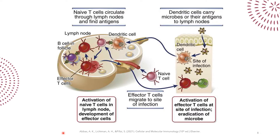If the presentation is successful, naive T cells will be activated to become effector T cells — what we call them after activation when they are ready to affect immune response. After this activation, some effector T cells will remain in the lymph nodes to help with the activation of B cells, while other T cells will move from the lymph nodes to the site of infection to fight off the pathogens there.